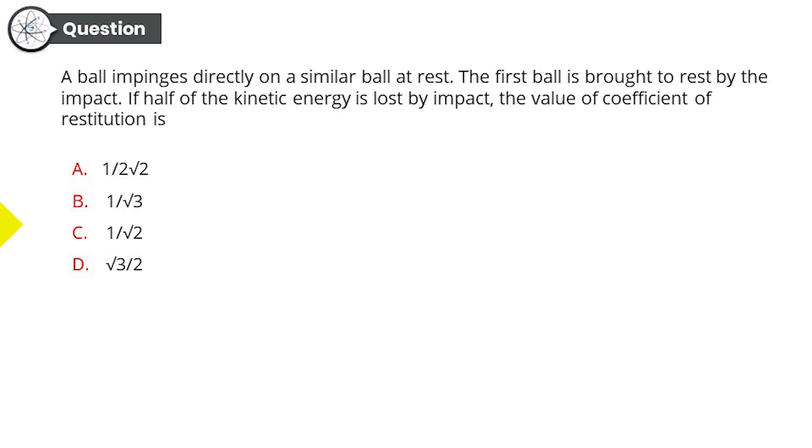Moving on to question number four. A ball impinges directly on a similar ball at rest. The first ball is brought to rest by the impact. If half of the kinetic energy is lost by impact, the value of coefficient of restitution is how much? Option A: 1/(2√2). Option B: 1/√3. Option C: 1/√2. Option D: √3/2. What do you think?